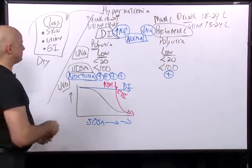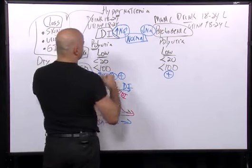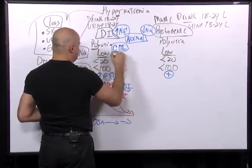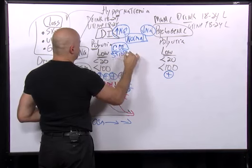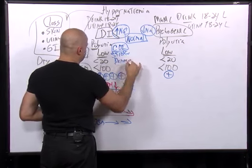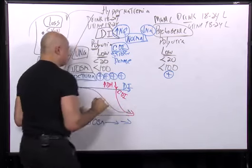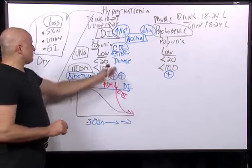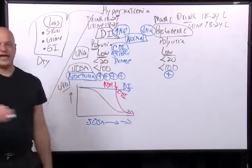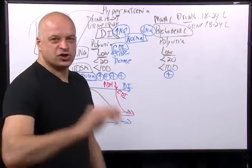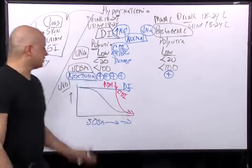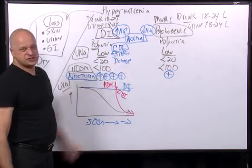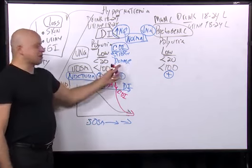Central diabetes insipidus is simply a deficiency — any sort of brain damage: stroke, tumor, trauma, hypoxia, infection, or granulomatous disease destroying the hypothalamus, the paraventricular and supraoptic nuclei where ADH is made. Causes include stroke, head trauma, cancer, hypoxia, sarcoidosis, and histiocytosis X.